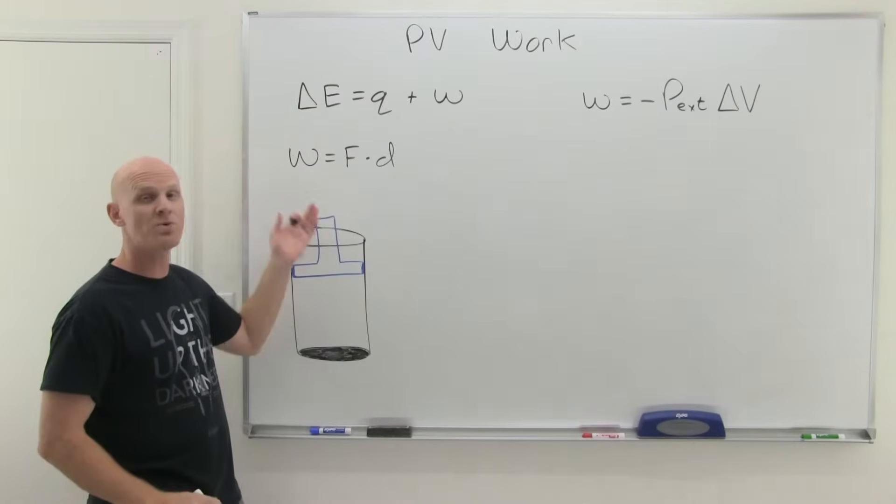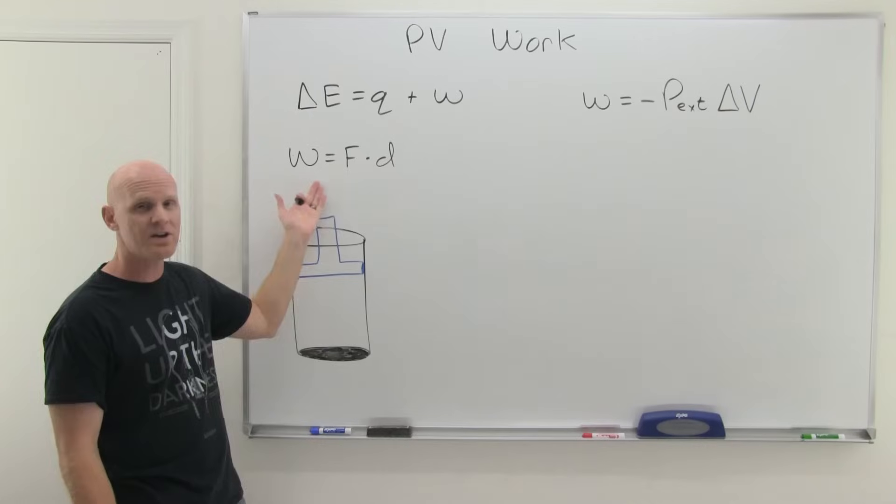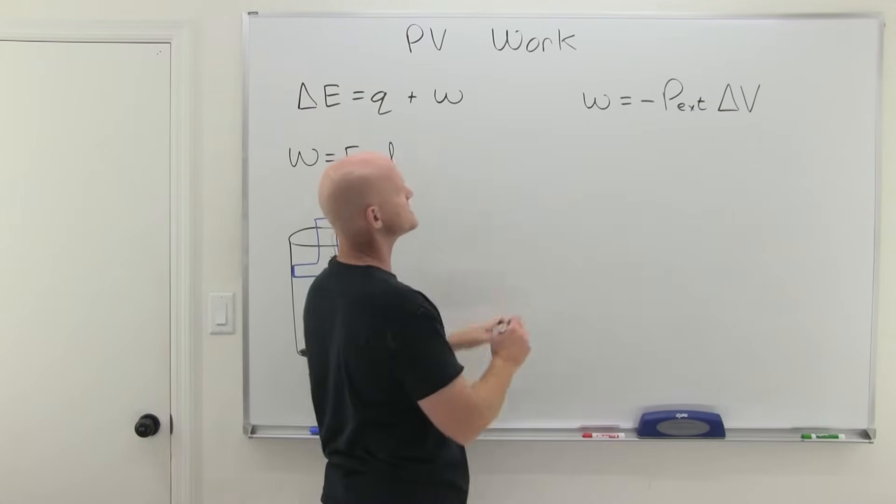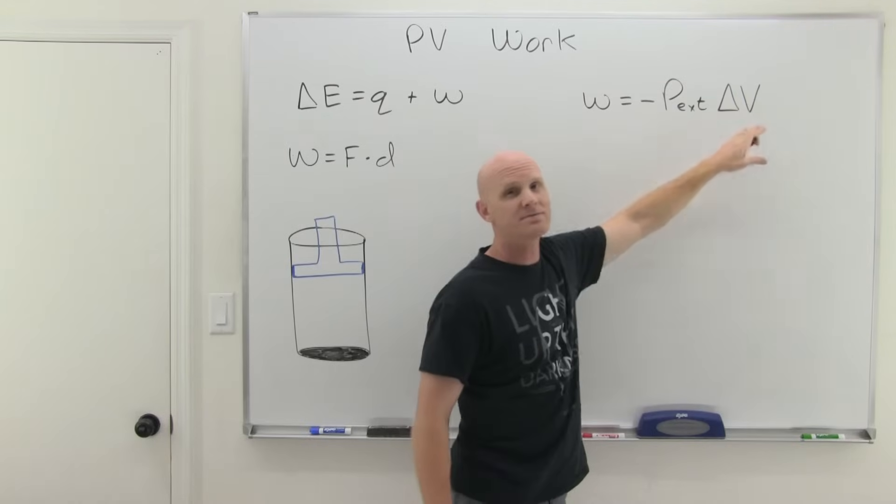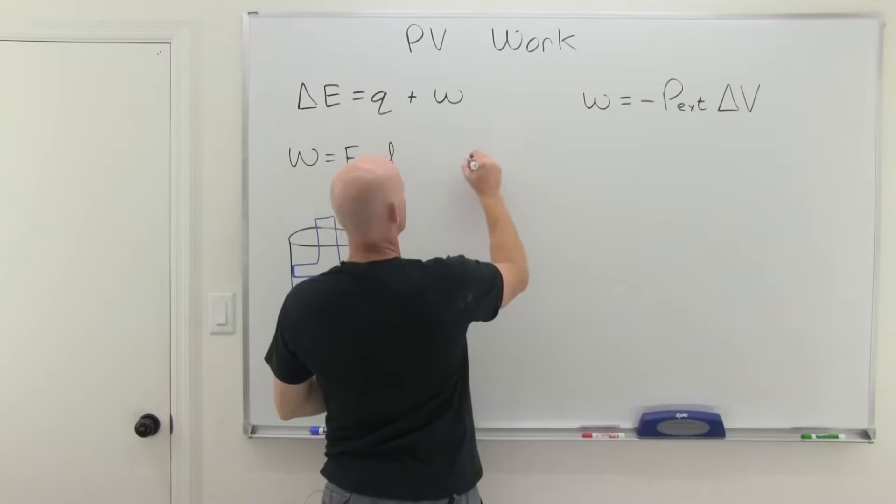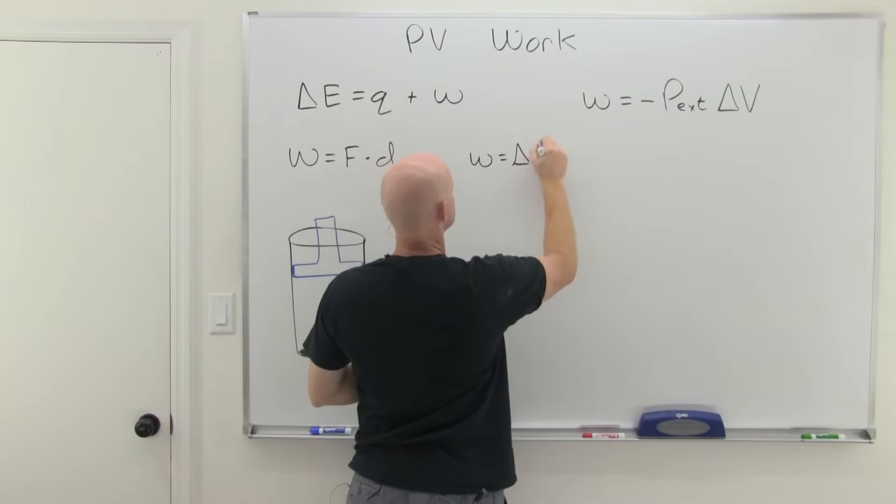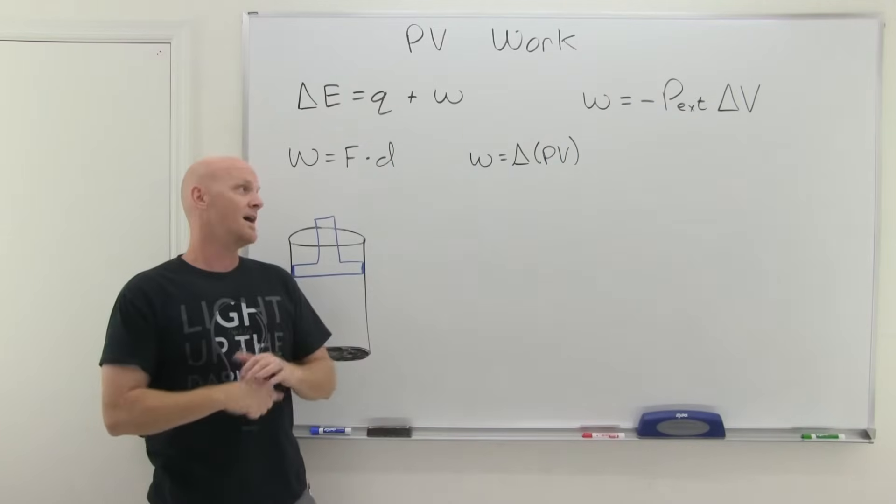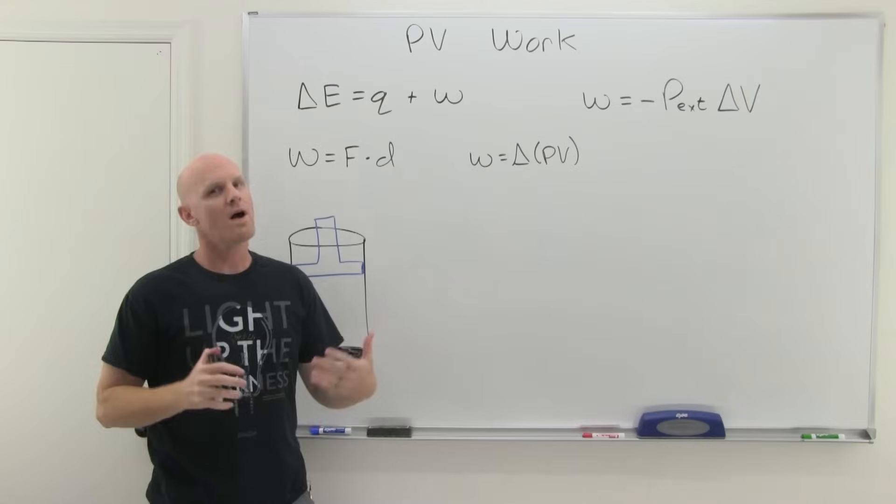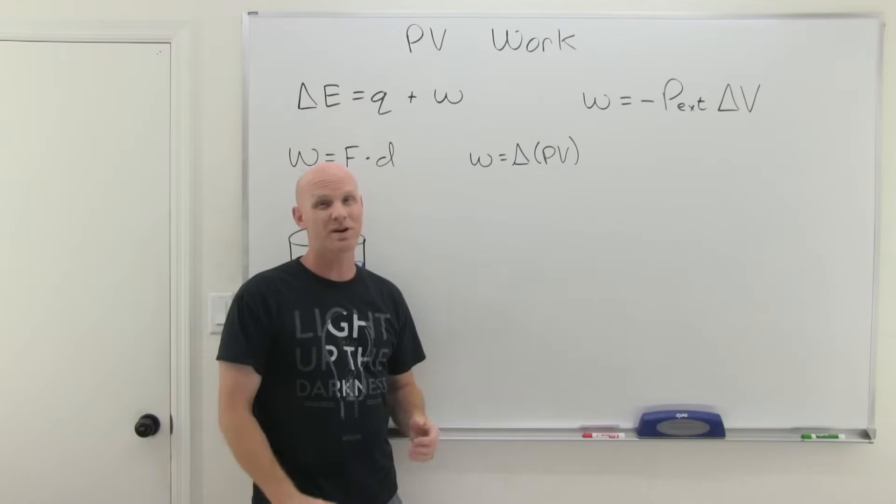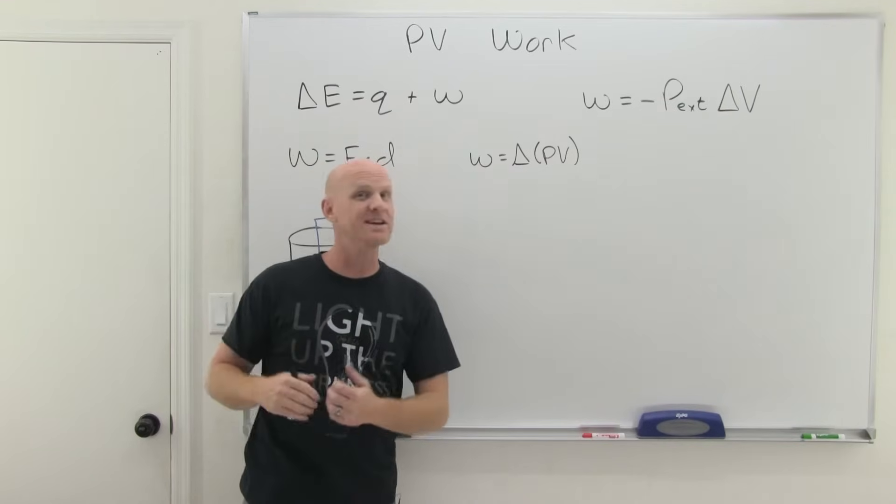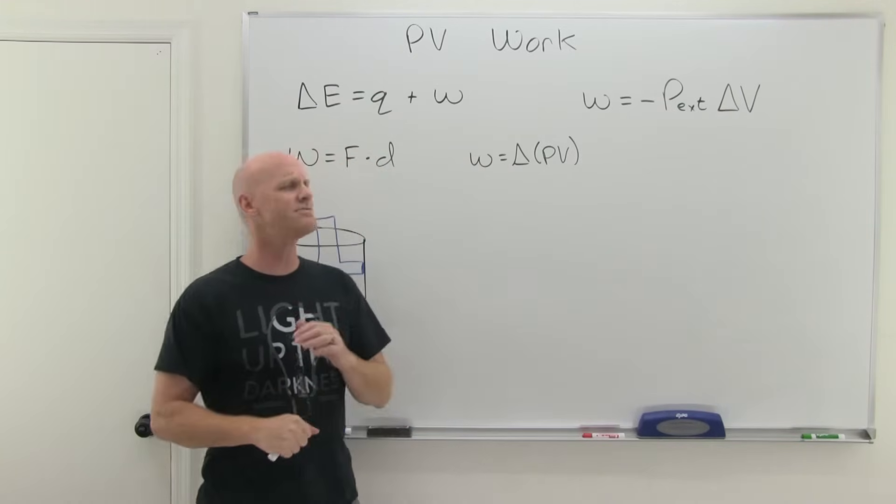And so the question is, why are we allowed to use work as being pressure times volume? It turns out that work is actually equal to the change in PV. That's the working definition of work in terms of pressure volume. The problem is that if you actually want to solve for work, it's probably going to involve calculus and solving for the area under a curve and taking an integral, and that's not very fun.